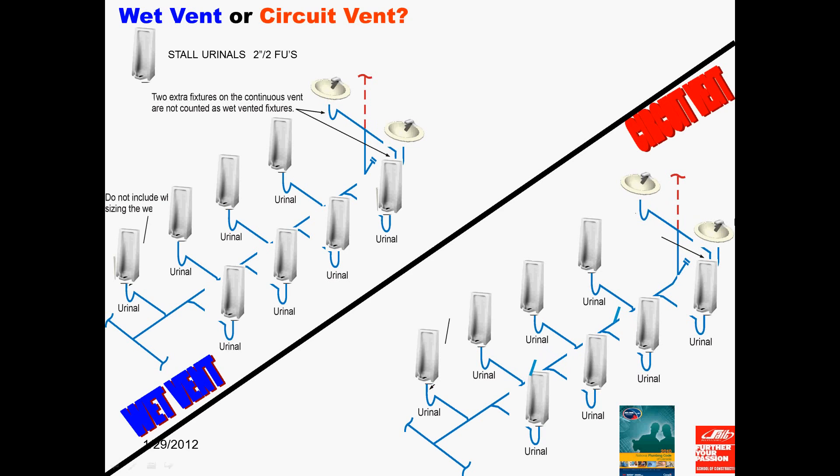However, we will wet vent the urinals first on the top, and then we will circuit vent the urinals last on the bottom half of the page. To start off, we will mark the wet vent in bold blue. Notice how it starts at the two labs and ends at the last urinal. All eight urinals are being wet vented. However, how many fixtures are in the wet vent?